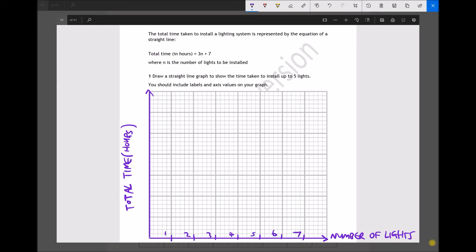Now what we need to do is find the maximum total time taken in hours before we apply any labels to our y-axis. The question asks us to produce a graph that will allow for the installation of up to 5 lights, so the largest number of n that we require is 5. Therefore, the largest value on our time taken axis is going to be 3 times 5 plus 7, which is 22. So the time required to install 5 lights is 22 hours.